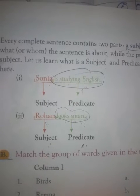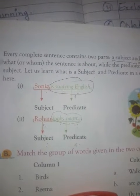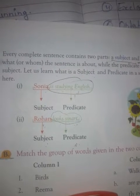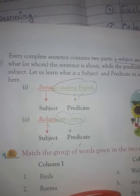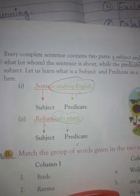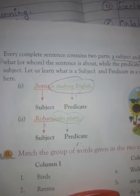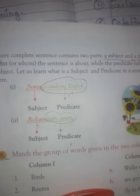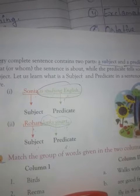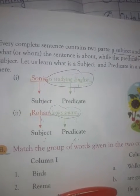So do you understand? Every complete sentence must have a subject and a predicate. The subject of a sentence names a person, place, thing, or idea — it tells us who or what the sentence is all about. The predicate expresses some action or work done by the subject. All doing words are predicates.